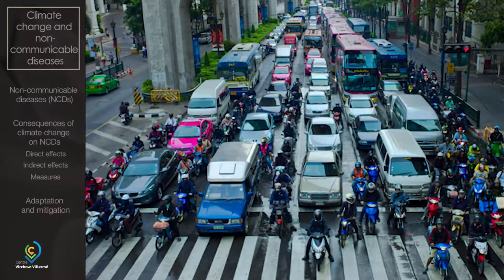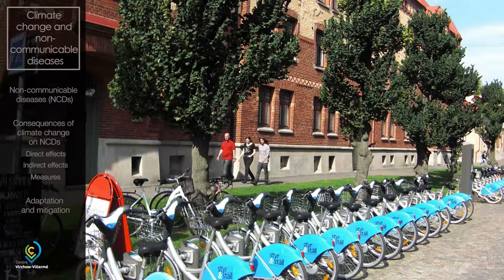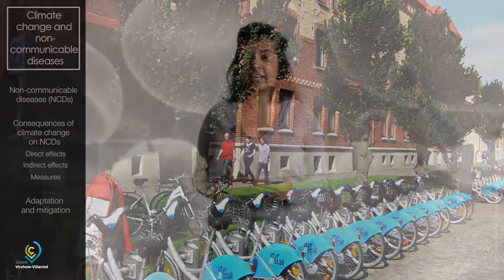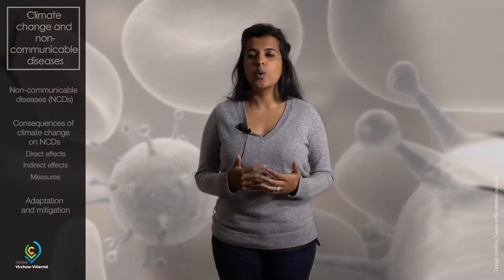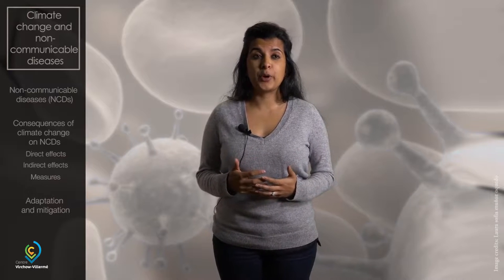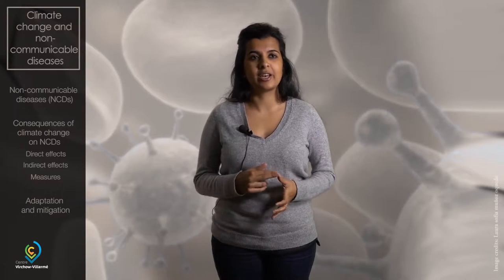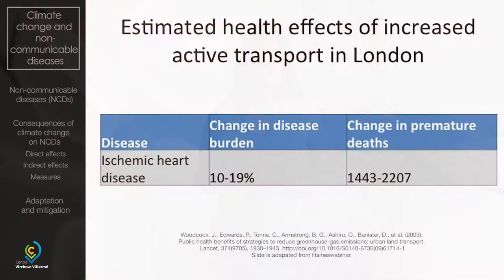Moving away from fossil fuel dependent cars towards transport run by clean or renewable energy can both reduce air pollutants and the risk of lung cancer and respiratory disease. Improving urban infrastructure to increase walkability and enable safe cycling also indirectly reduces dependence on cars and has the potential to reduce the burden from cancer, diabetes, obesity, cardiovascular and health-related problems. For example, in London, increased active transport is estimated to reduce the burden of ischemic heart disease by about 10 to 15% in one year, saving around 1,400 to 2,200 deaths per 1 million people.